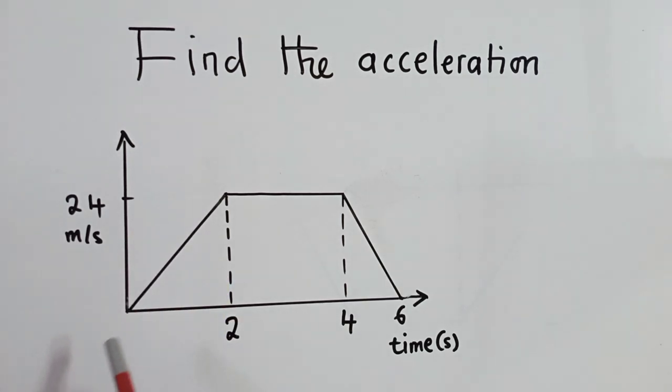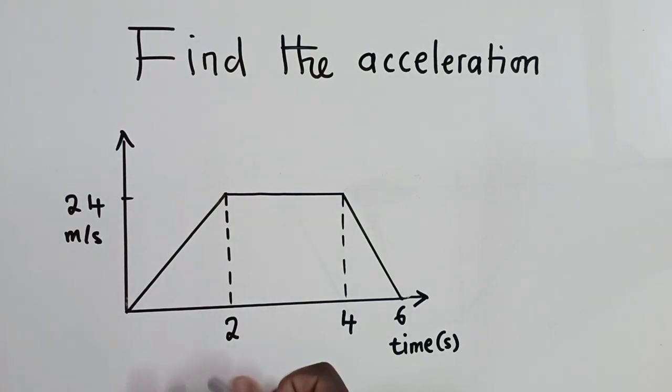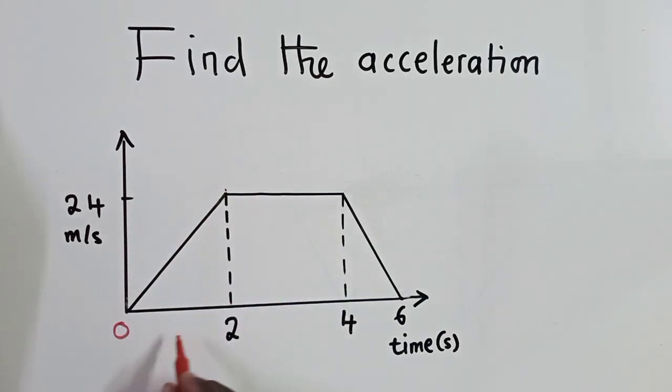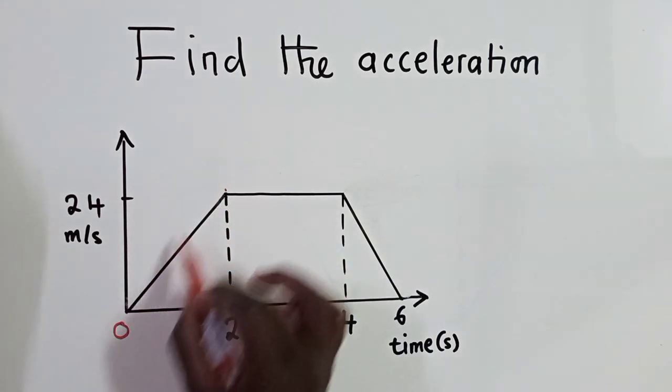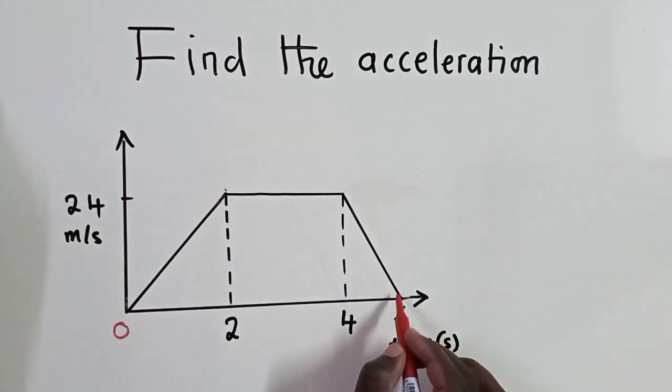So here we've been told to find the acceleration. Now looking at the question or the diagram that we have, we have this graph accelerating from here, and here we must know that it's zero. So from zero all the way up to here. Our focus would just be this side where it was accelerating. This side is decelerating.